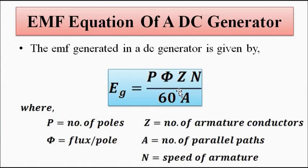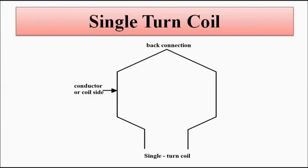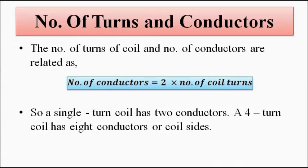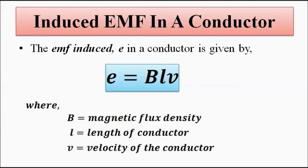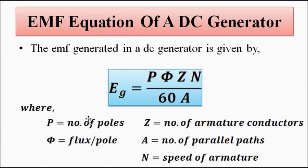We will derive this expression in a separate video series — it may take three to four or five videos because there are many concepts to explain first. So this was just a basic overview so you know what we are going to discuss. In summary, we covered: types of coil (single turn and multiple turn), the relationship between number of turns and conductors, and the EMF equation of a DC generator. I hope you liked this video. Please subscribe to Engineering Tutorial for more videos on electrical, electronics, instrumentation, and communication engineering. Have a great day, thank you very much.